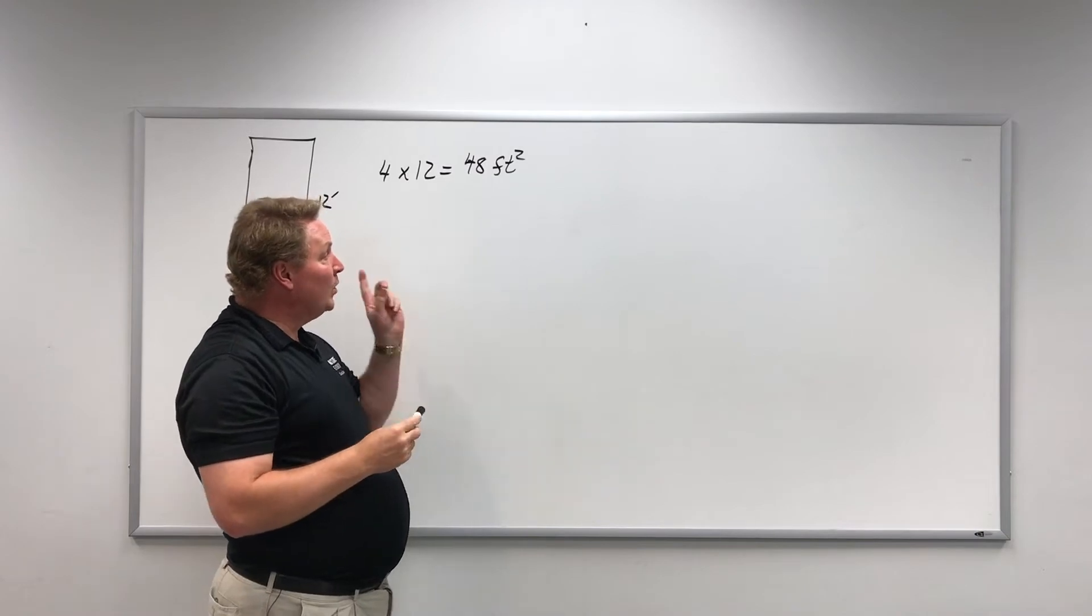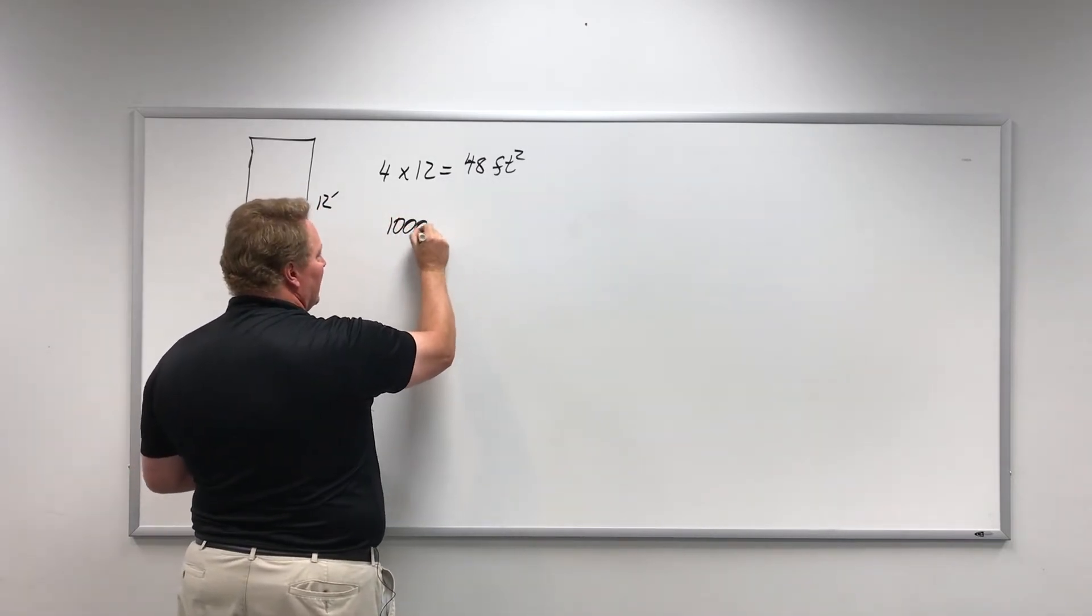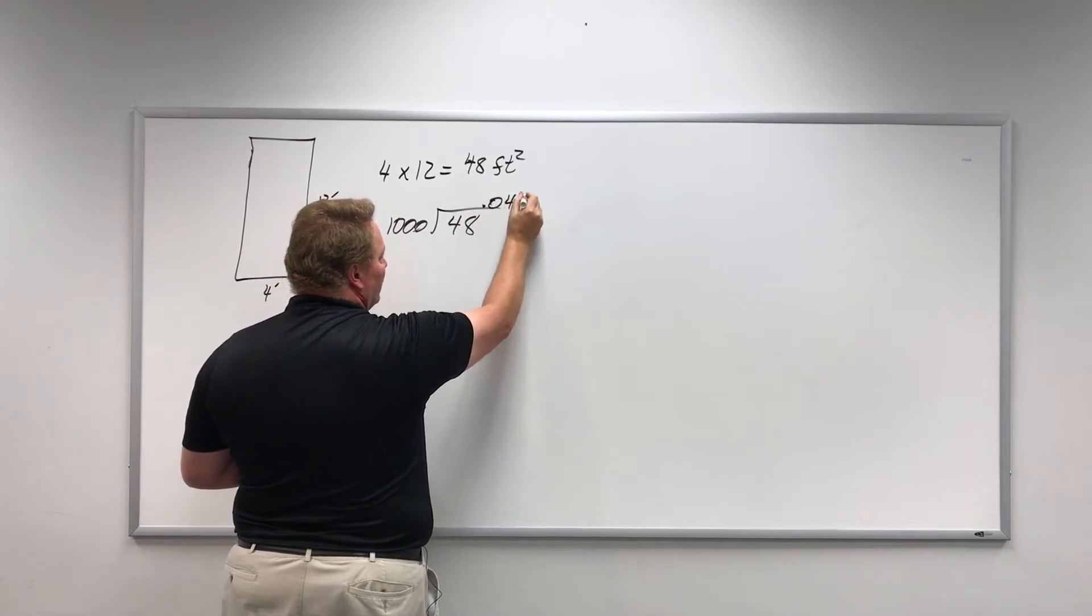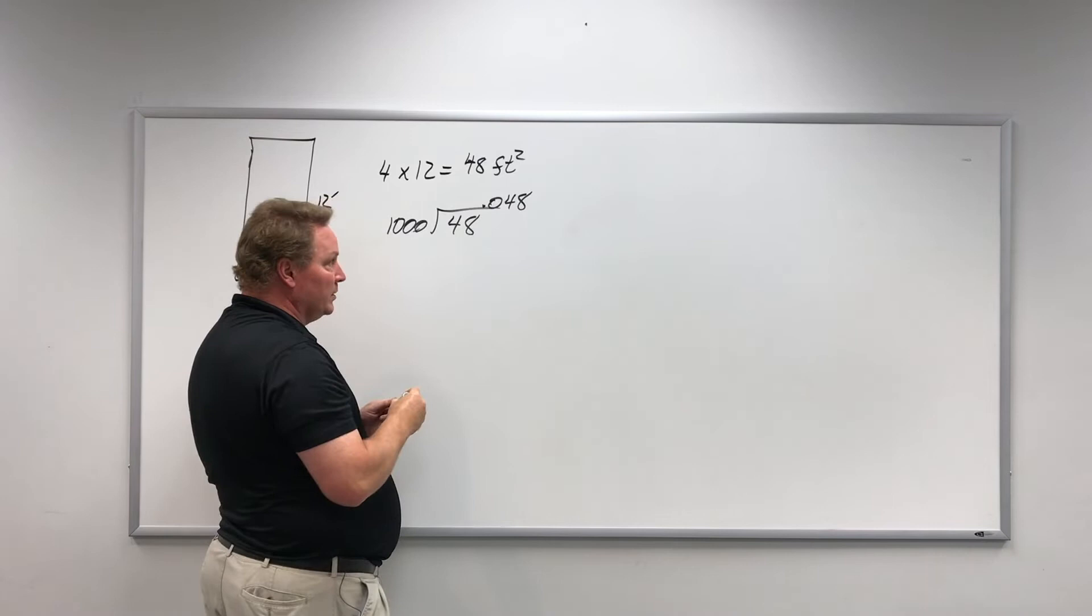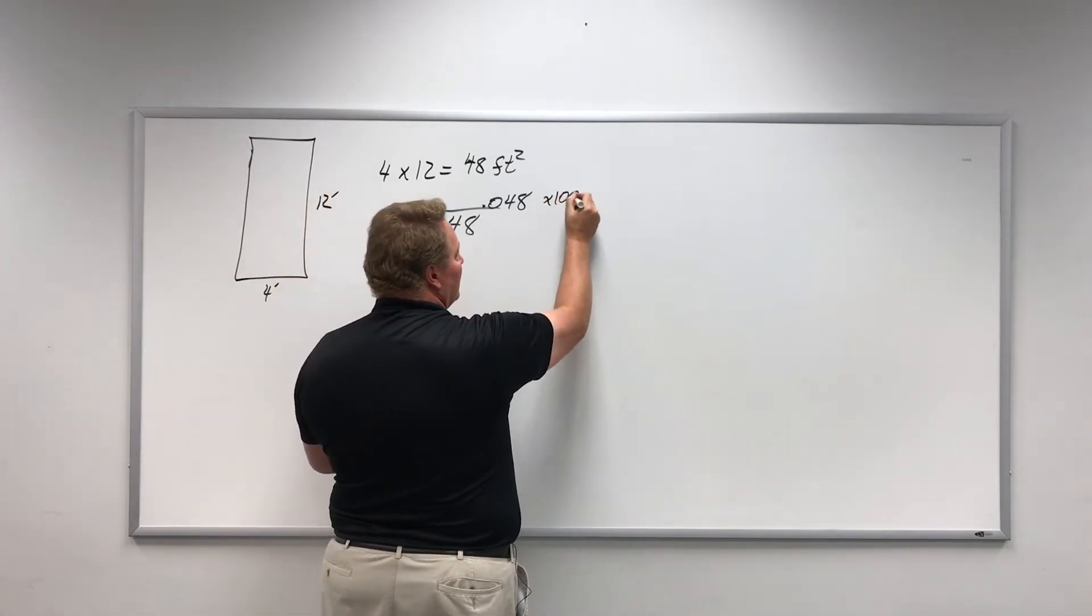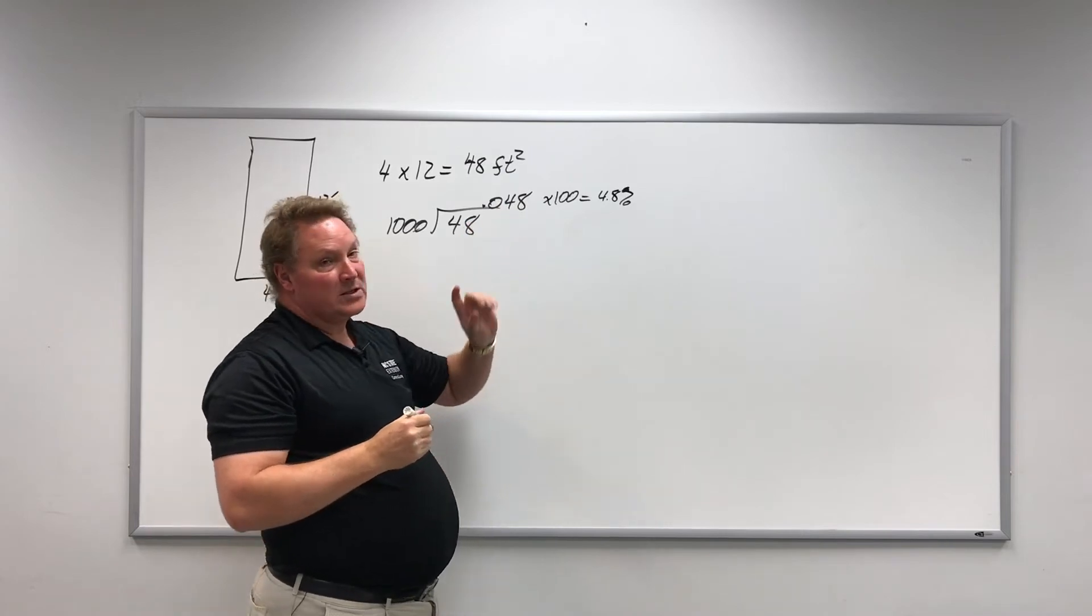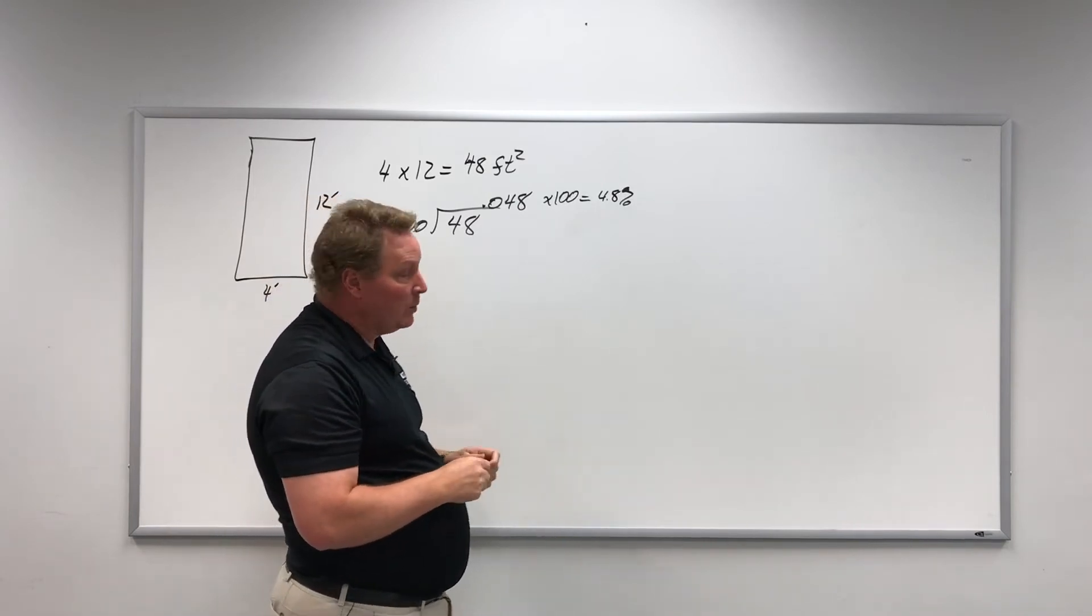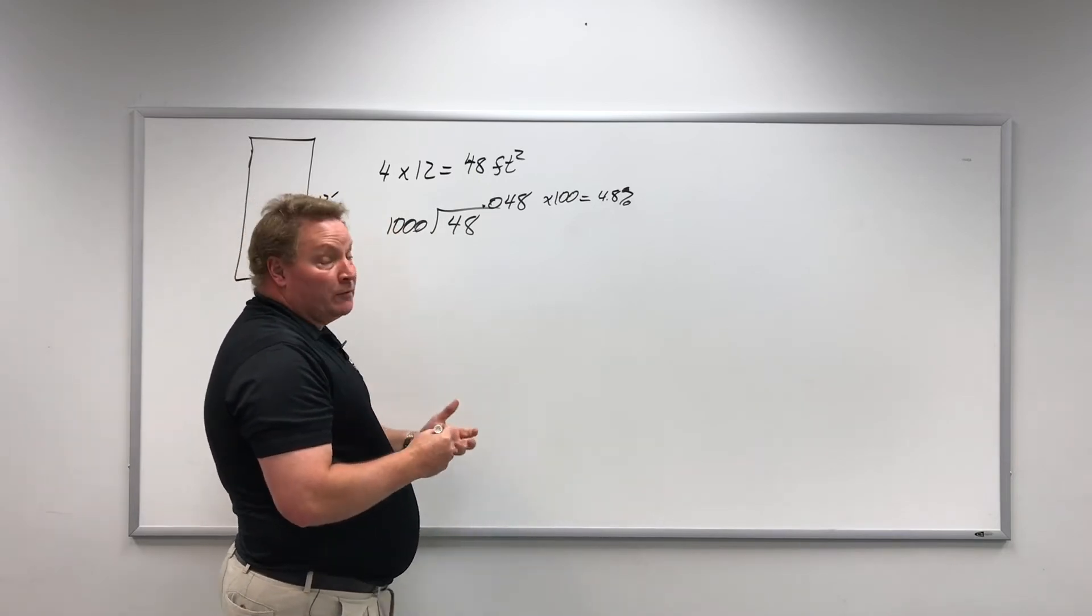So what we want to figure out is what percentage of 1,000 square feet is this 48 square feet. In order to do that, we take the 48 and divide by 1,000, and we get 0.048. Or the simple way my dad taught me in high school was move the decimal point over three points, which is what we did here. If we multiply that by 100, we get 4.8 percent. So 48 square feet is 4.8 percent of 1,000 square feet. That's how much we want to apply - 4.8 percent of the five pounds per 1,000 square feet to our 48 square foot bed.